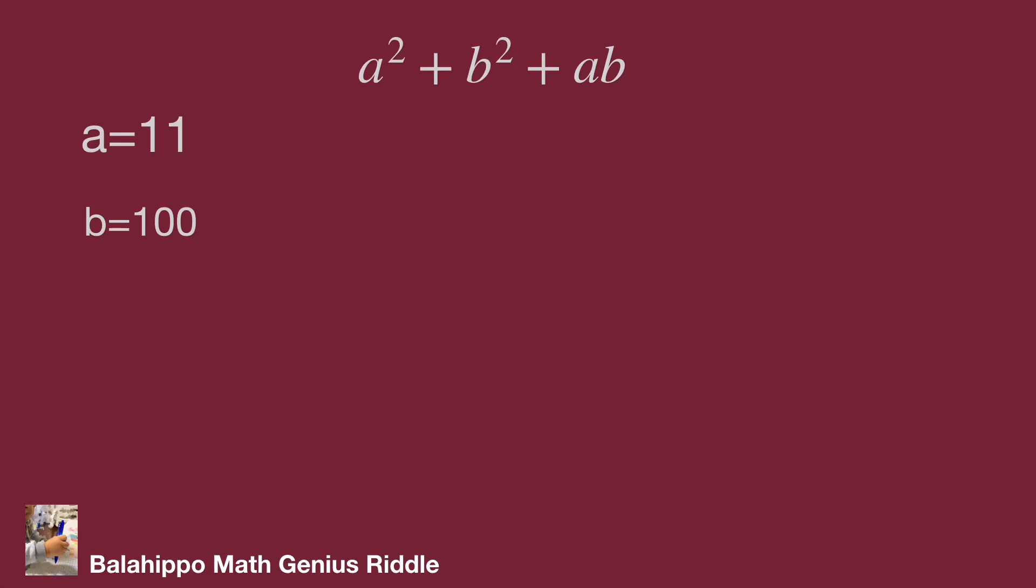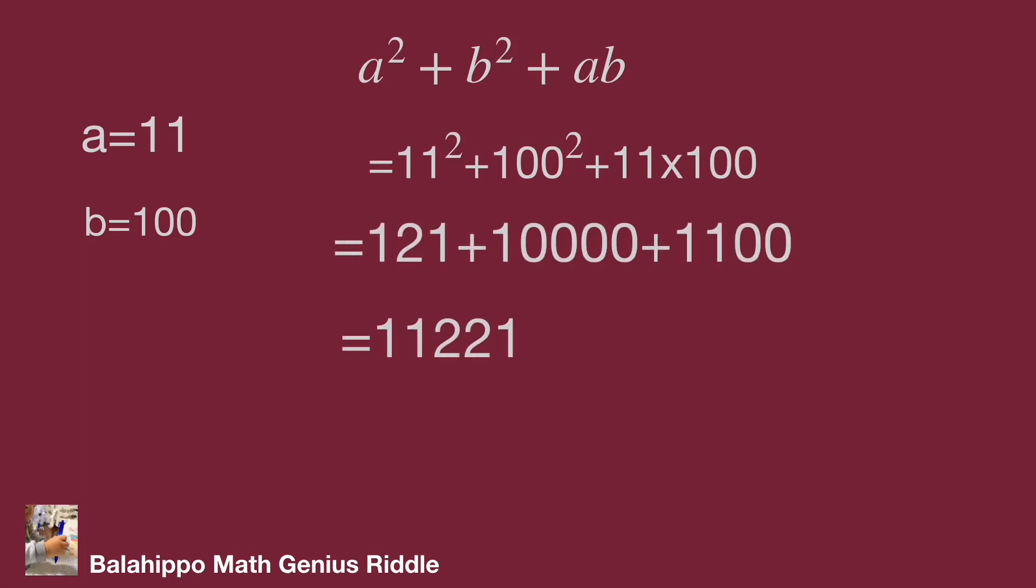Then the value becomes 11^2 + 100^2 + 11 × 100 = 121 + 10000 + 1100 = 11221. That's the answer. Did you get the result? Hope you enjoy the video. Thank you.